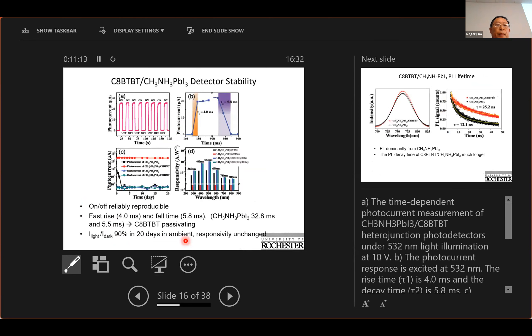Not only improved efficiency but also improved the stability. Here is the on-off, you can see the reproducibility, light on light off is very reproducible. And this shows the photo current without CABTBT the device just dropped quickly, but with CABTBT the photo current was far more stable.